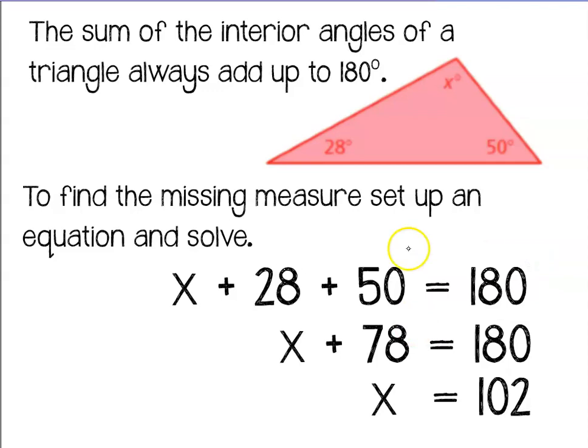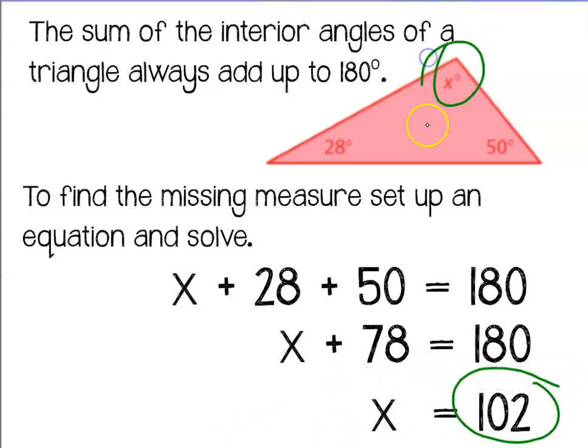So I can use my calculator to combine these like terms and turn them into 78. Then in order to figure out what x is equal to, I simply subtract 78 from both sides of my equation, and that's how I got my answer of 102 degrees for x.